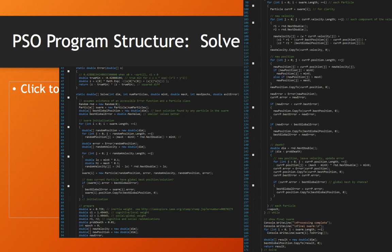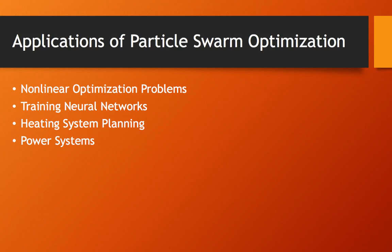Some of the applications of particle swarm optimization include any type of optimization problem that is non-linear, and it's also been used to train neural networks, heating system planning, and power systems.